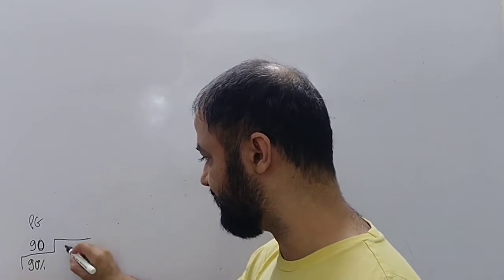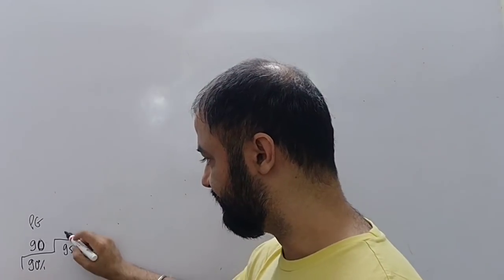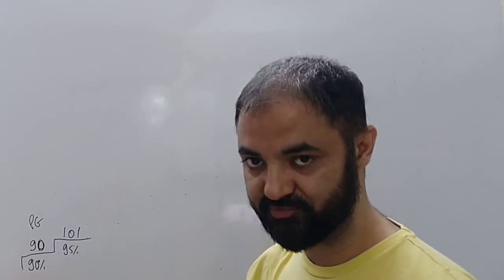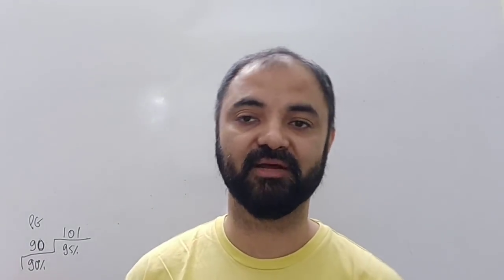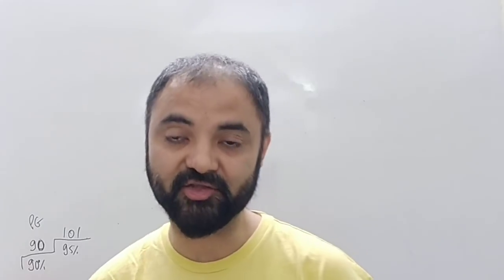If I increase the percentile to 95 percentile, 95 percentile is 101 marks. In CET, without negative marking, 100 marks is the decent score. So, if there is a good IQ level and a little bit better, then you can reach 100 marks. So, above 100, your competition is going on. 95 percentile.